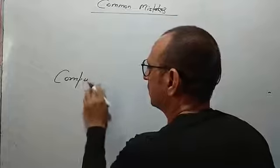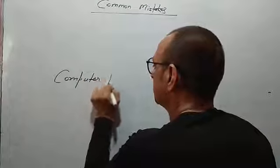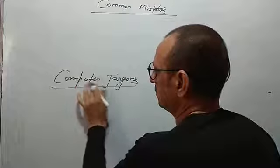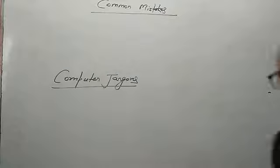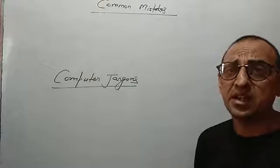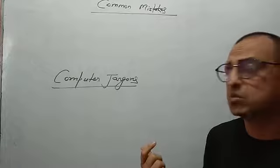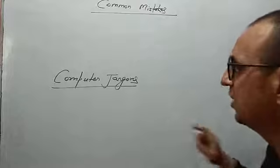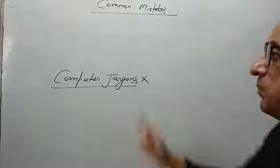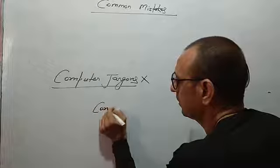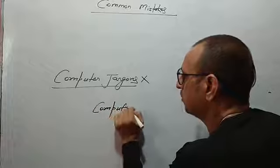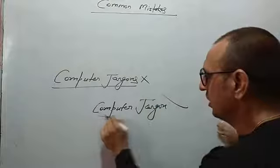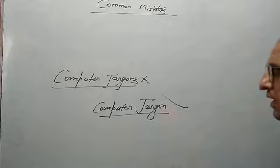Next expression: 'computer jargons.' Jargon means the technical terms used in any particular technology or field. But 'jargon' is an uncountable noun, so instead of 'computer jargons,' we should simply say 'computer jargon.' This is correct. This is a noun-related mistake. I hope you have got it.